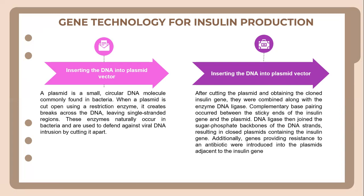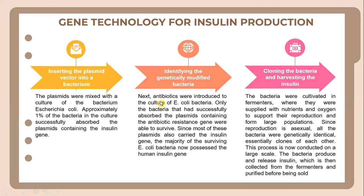DNA ligase then joined the sugar-phosphate backbone of the DNA strands, resulting in a closed plasmid containing the insulin gene. Additionally, genes providing resistance to an antibiotic were introduced into the plasmid adjacent to the insulin gene. The next process is inserting the plasmid vector into the bacterium, where the plasmid mixes with cultures of E. coli. Approximately one percent of the bacteria in the culture successfully absorb the plasmid containing the insulin gene.